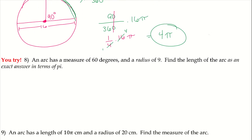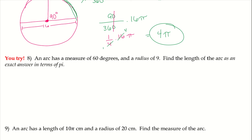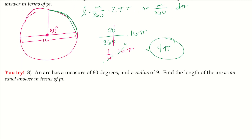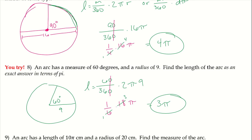Go ahead and try number 8 — very similar to the problem we just did. Make sure you draw that picture along with it. For number 8, after simplifying the fractions and leaving it in terms of pi, the length of that arc is 3π.